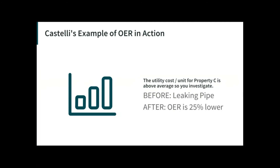After updating your utility bill once you find the problem, a month later you notice that property C's OER is now 25% less. Calculating OER on a regular basis using specific expenses — ideally monthly — can help you narrow down the reason for a rise in OER, get expenses back under control, and ultimately create a more profitable, sustainable rental business.